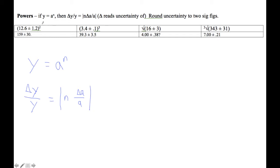Let's take a look at this one here: 12.6 plus or minus 1.2, and we're just squaring that. So for this one, n equals 2.